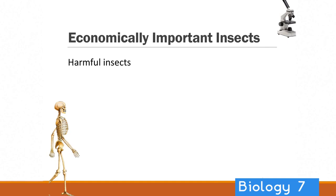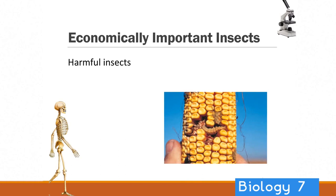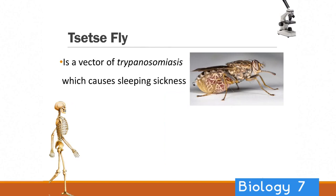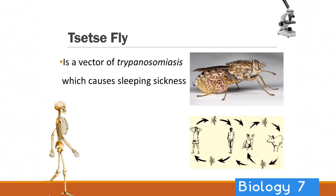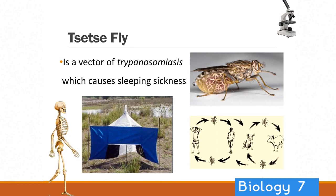There are of course many harmful insects, some of which can cause catastrophic losses in crop yields. They can cause diseases and they can damage the actual crop. One example of a harmful insect is the tsetse fly — it is a vector of a disease called trypanosomiasis. This causes a bad sleeping sickness and can actually spread this disease through the fly, which transfers from animals to humans. In some places it's really crucial to set up barricades against them.